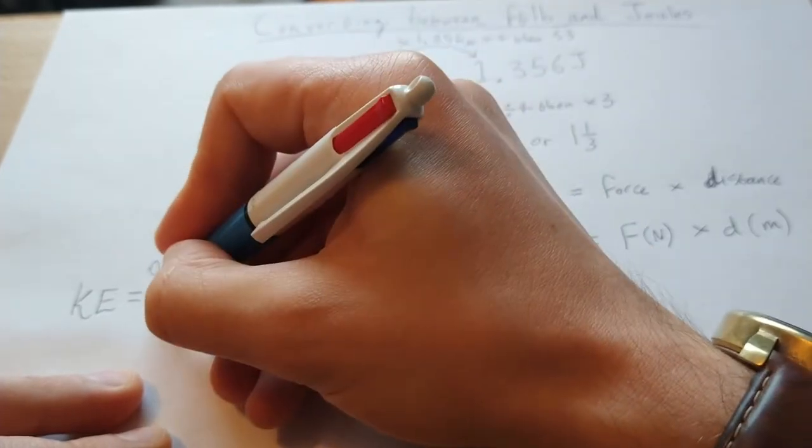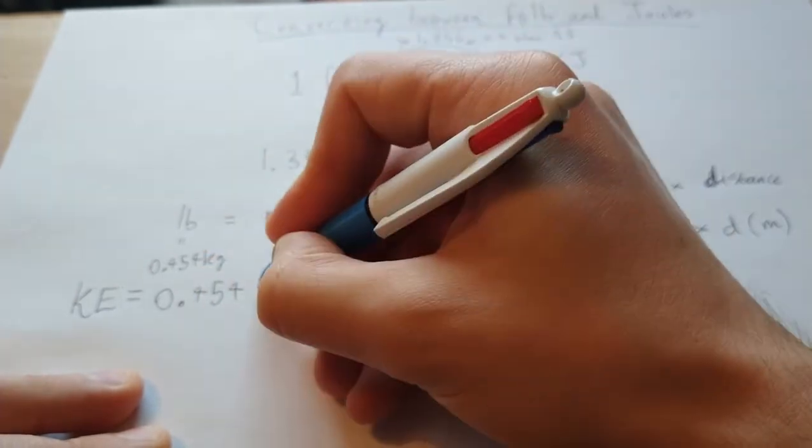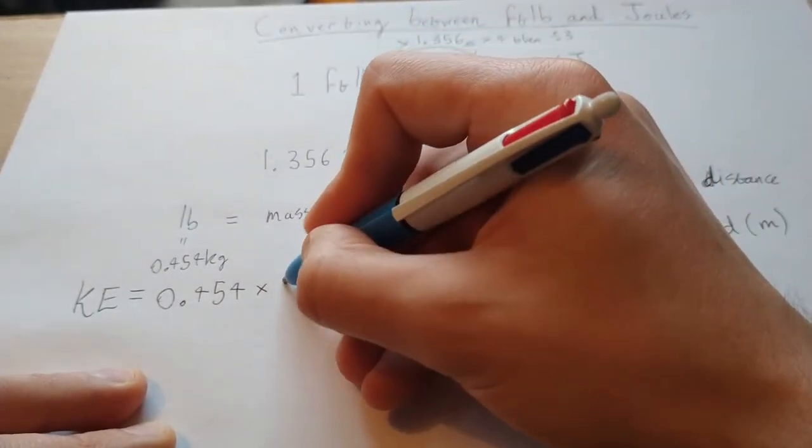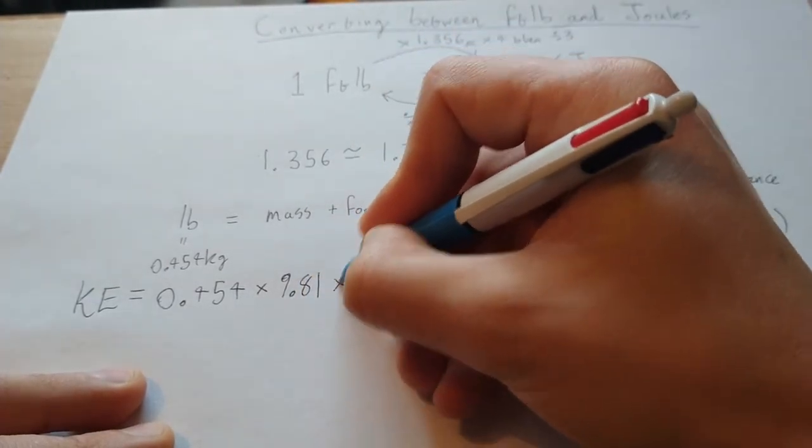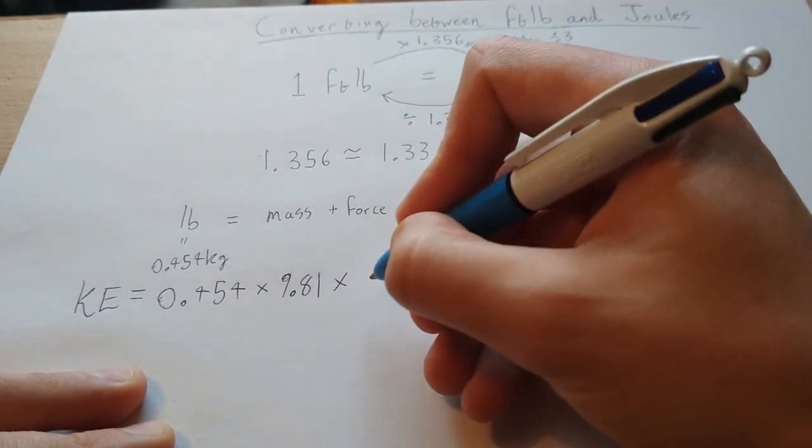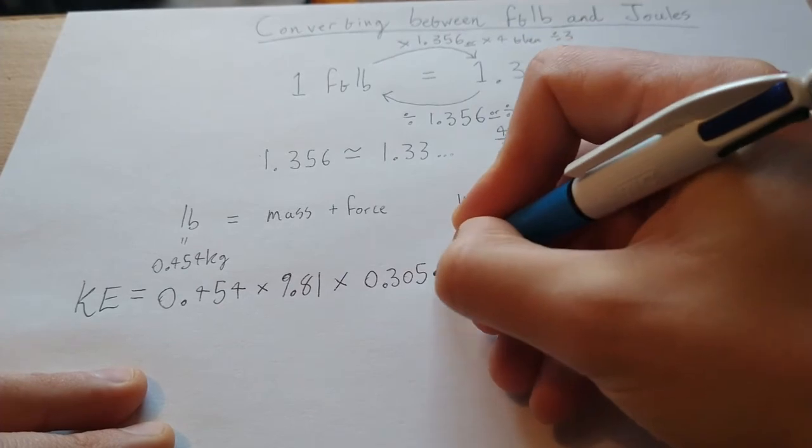So it'll be 0.454 times the Earth's gravity, so the force per kilogram which is 9.81, and multiply that by a foot which is 0.305 meters.